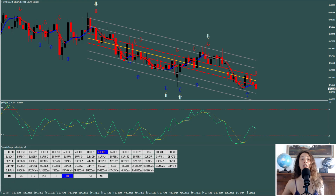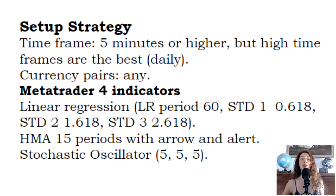Time frame: 50 minutes or higher; high time frames are the best. Daily currency pairs: any. Metatrader indicators: Linear Regression (LR) with period 60, std 0.618, std 2 1.618, std 3 2.618; HEMA 15 period with arrow and alert; Stochastic Oscillator 5-5-5.